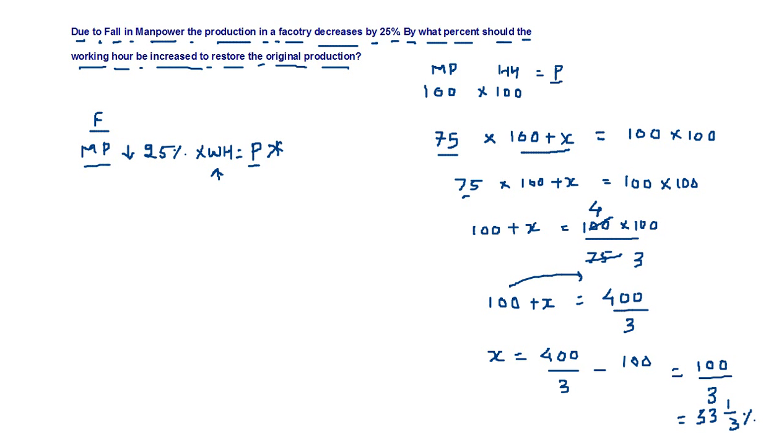100 upon 3 is 33 and 1/3 percent. So if the manpower is reduced by 25%, then the working hour of the remaining employee should be increased by 33 and 1/3 percent to restore the original production.